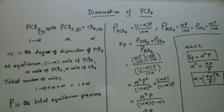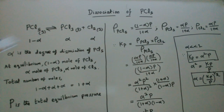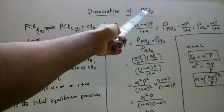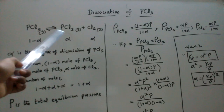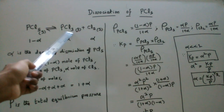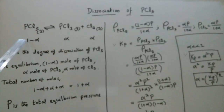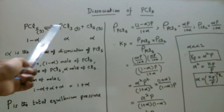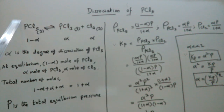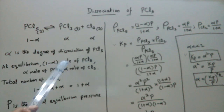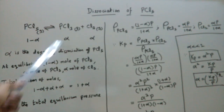Welcome to Chemistry Exam Channel. In this video we are going to discuss the dissociation of phosphorus pentachloride. PCl₅ dissociates to give phosphorus trichloride and chlorine. We fix the values as 1 minus alpha, alpha, and alpha. Here alpha is the degree of dissociation of PCl₅. At equilibrium we have 1 minus alpha moles of PCl₅, alpha moles of PCl₃, and alpha moles of Cl₂.